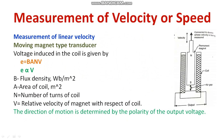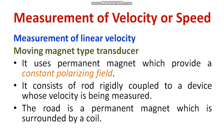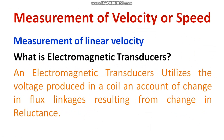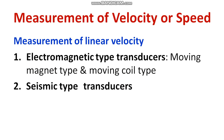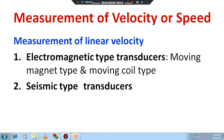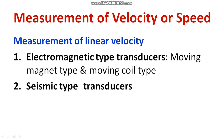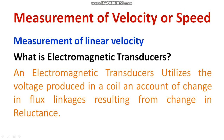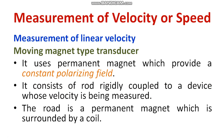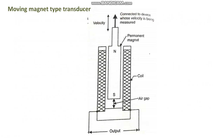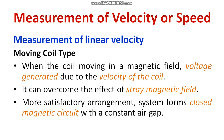In this session, I have discussed electromagnetic type transducers. There are two types: one is moving magnet type, and the other is moving coil type. Thank you very much for watching this video. If you have any queries, please put them in the comment box.